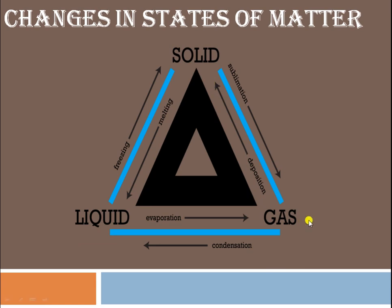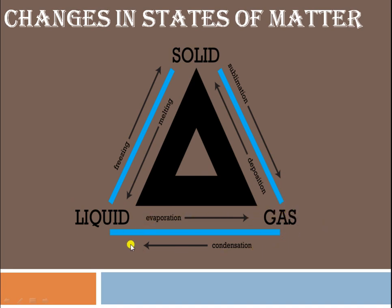There are different terms for changes in states of matter. When solid converts directly to gas, the process is known as sublimation. When gas converts directly to solid, the process is known as deposition. When solid converts to liquid, it is known as melting. When liquid converts to solid, it is known as freezing. When you add heat, your liquid starts to evaporate and converts into the gaseous state. When you remove heat from the gaseous phase, it condenses and converts back into liquid — this is known as condensation.